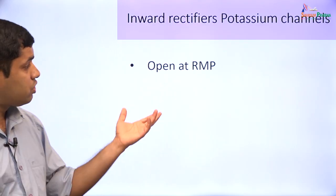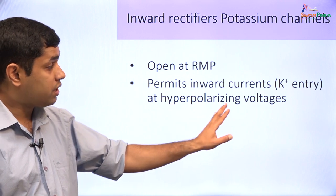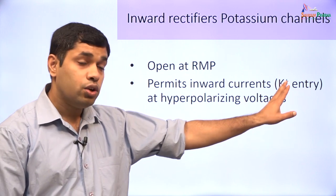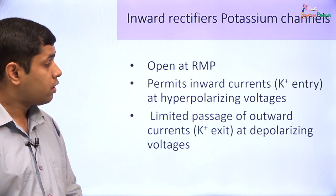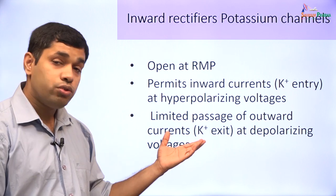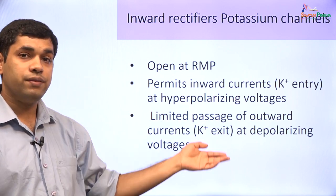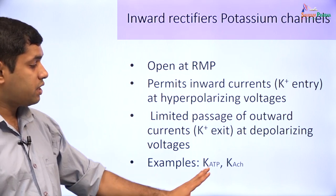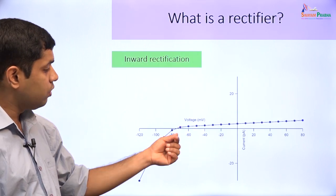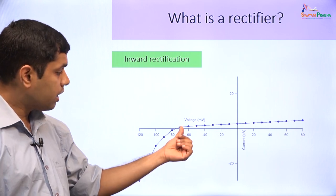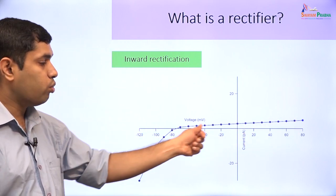An inward rectifier potassium channel is open at the resting membrane potential. It permits an inward current due to potassium entry at hyperpolarizing voltages. It can also pass a positive current due to potassium exit, but the magnitude of this positive current is much less than the inward current, and therefore it is called a rectifier. Examples are the K-ATP channels and the K-ACH channels. The current-voltage profile shows an inward current at hyperpolarizing voltages and a small outward current at depolarizing voltages.